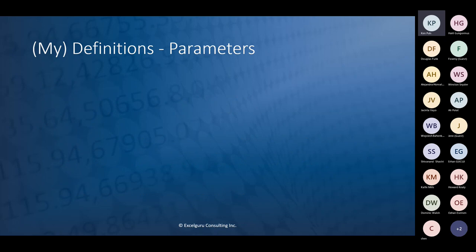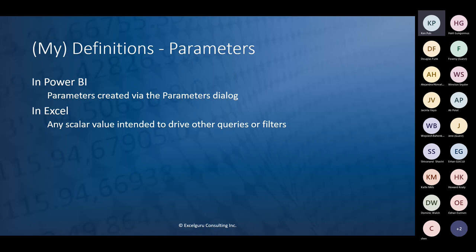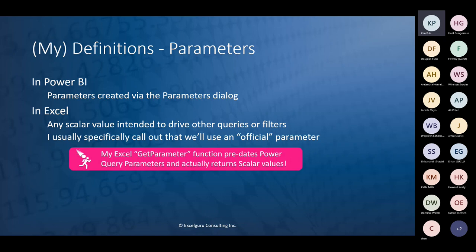When I talk about parameters, I have a different definition for Power BI versus Excel. In Power BI, a parameter is created via the parameters dialogue box inside the Power Query Editor — it's called a parameter, it's a parameter. In Excel, I refer to any scalar value that's intended to drive other queries or filters as a parameter. If I'm using the actual parameter functionality inside Excel, I will refer to that as an 'official parameter' in quotes, and I'll always preface it that way.